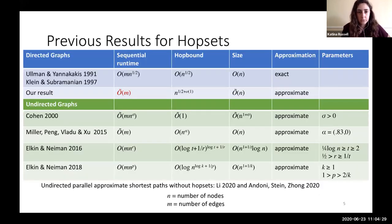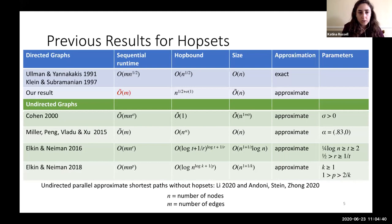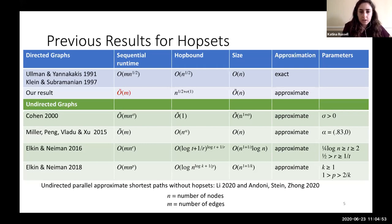Now I'll get into some previous results for hopsets as well as our result. For directed graphs there already exists an exact hopset with linear size and √n hop bound, but the sequential running time is pretty high at m·√m — due to Ullman and Yanakakis in '91 and Subramanian and Klein in '97. Our result reduces the work by a lot, getting nearly linear. Our hopset is an approximate hopset with nearly linear size, hop bound of n^(1/2 + o(1)), and nearly linear runtime.